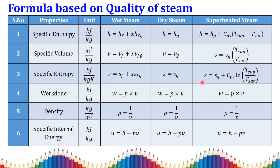For dry steam, s equals sg. For superheated steam, s equals sg plus Cp times ln(T_superheated / T_saturation). Flow work equals p times v for all three cases, but the specific volume varies according to the steam condition. Density is the reciprocal of specific volume. Specific internal energy is found from h equals u plus pv, so u equals h minus pv, where the specific enthalpy and volume depend on the steam state.